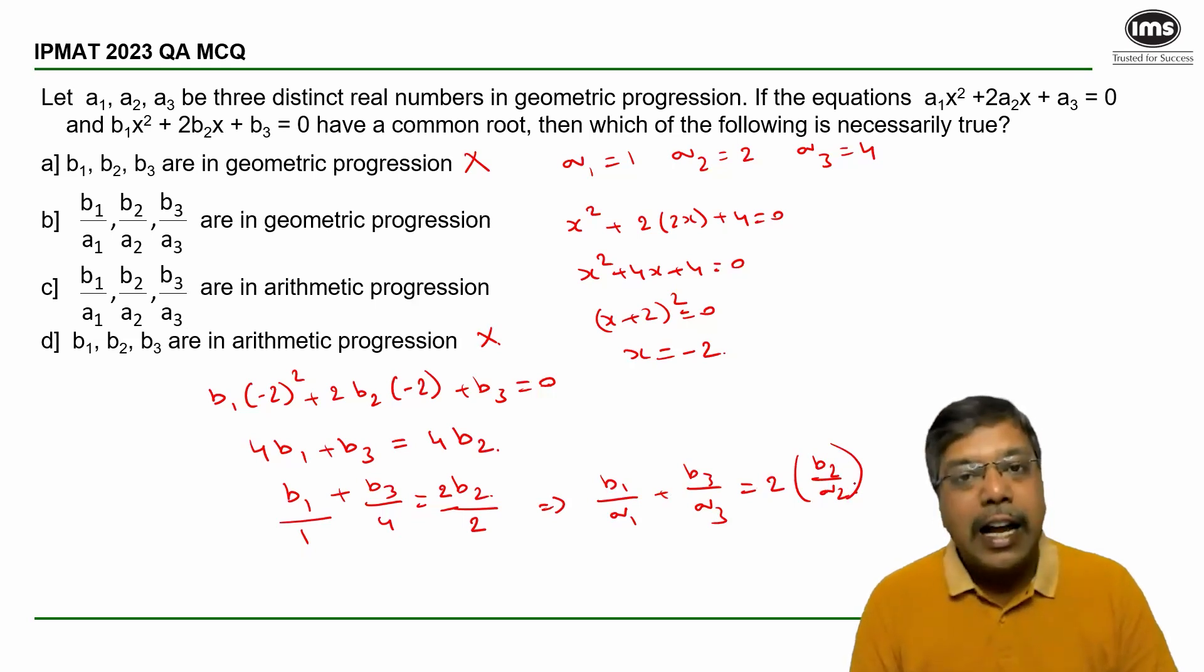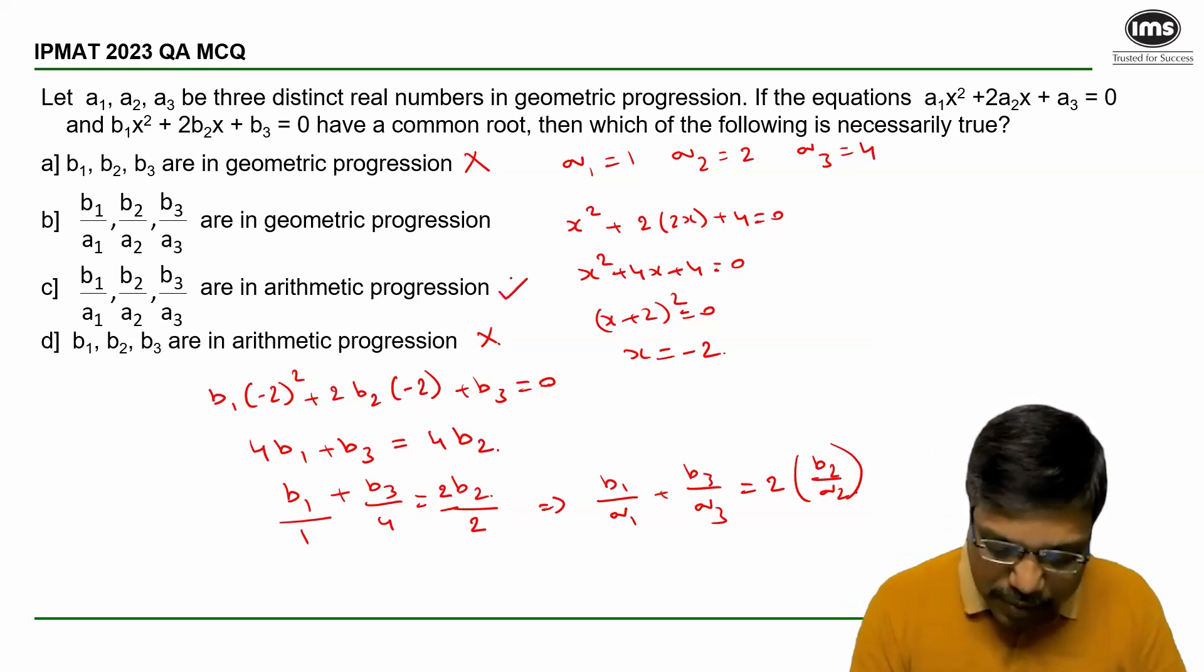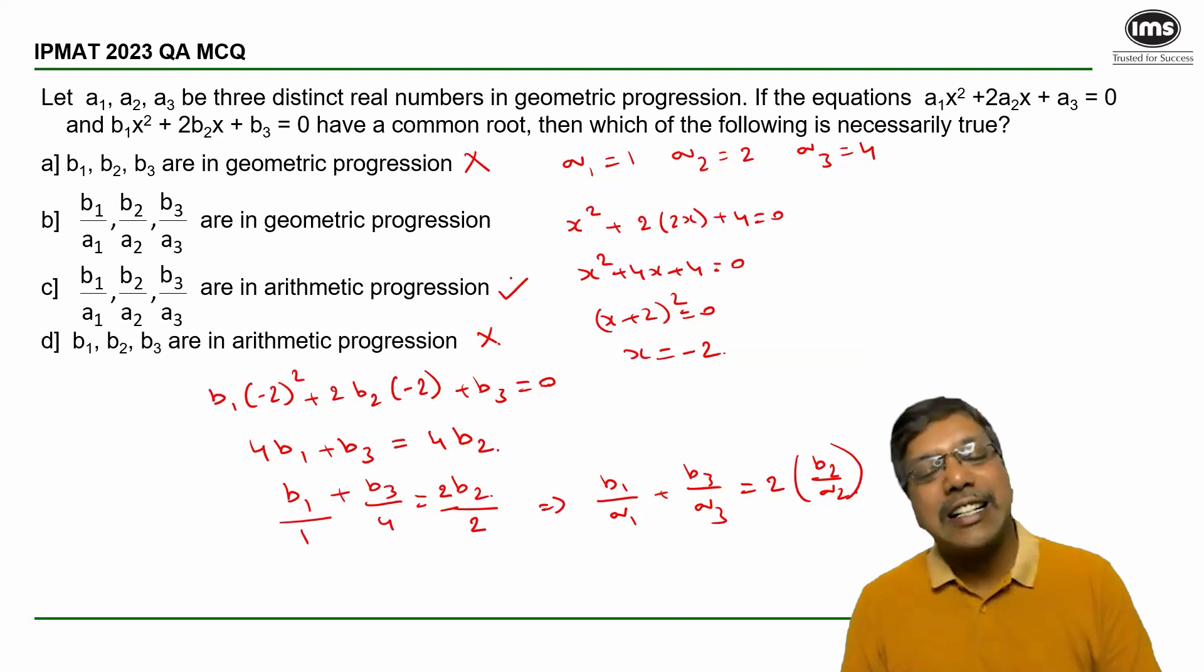which is an expression to prove the fact that B1/A1, B2/A2, B3/A3 are in arithmetic progression. Hence, answer option C.